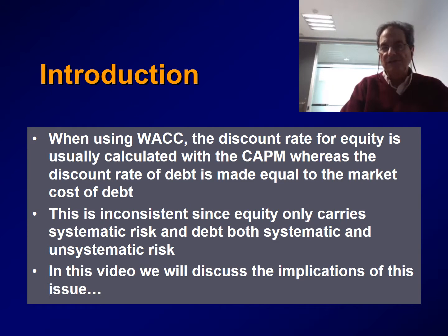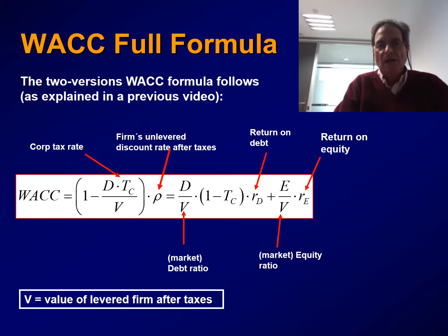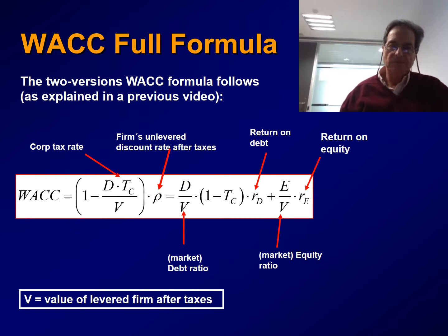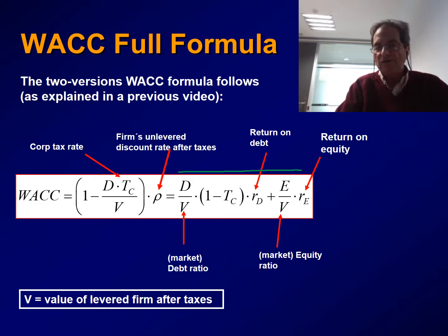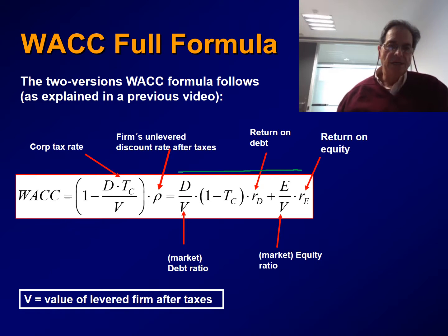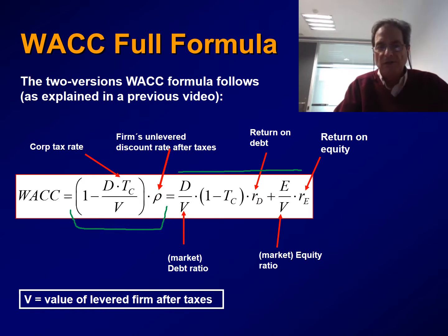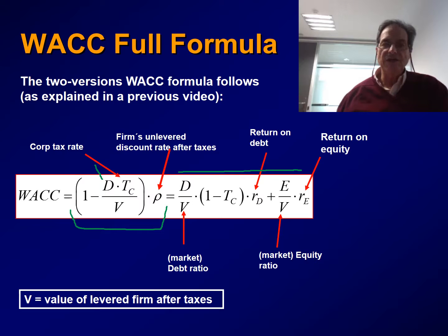We will discuss the implications of this point. Recall the full formula for WACC explained in a previous video. On the right, we have the traditional WACC formula: D over V multiplied by 1 minus the tax rate, times RD, plus E over V multiplied by RE. On the left side, we have the new version of the WACC formula, perfectly equivalent, in which WACC is calculated as 1 minus the leverage ratio times the corporate tax rate, all multiplied by the unlevered discount rate after taxes.